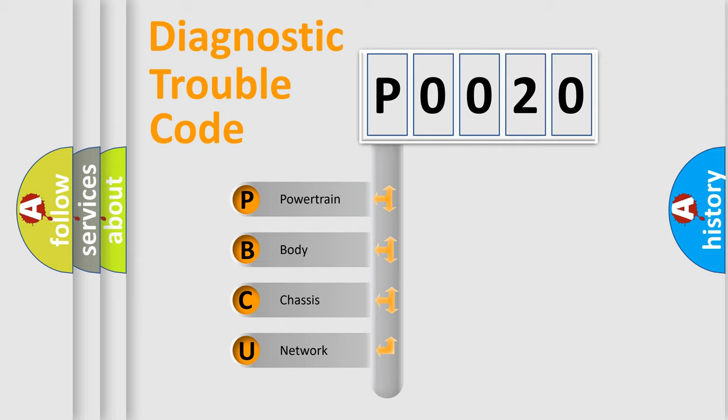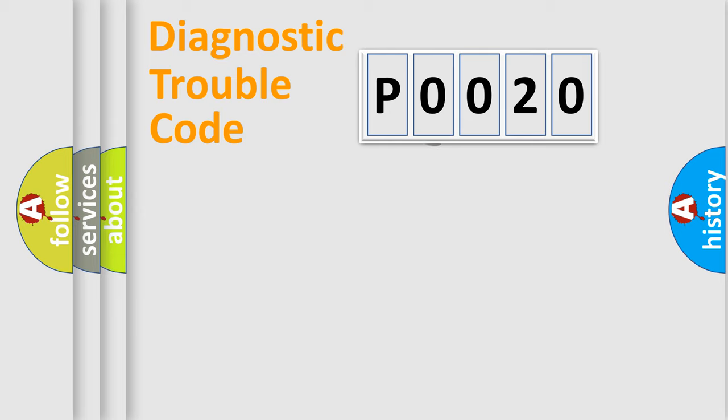We divide the electric system of automobiles into four basic units: Powertrain, Body, Chassis, and Network. This distribution is defined in the first character code.